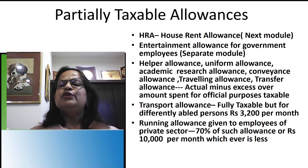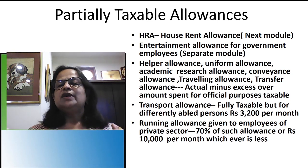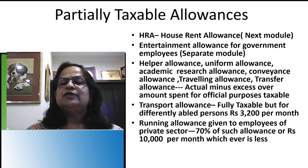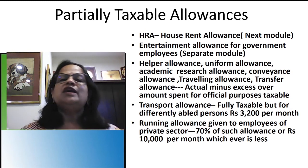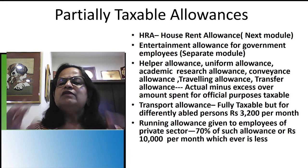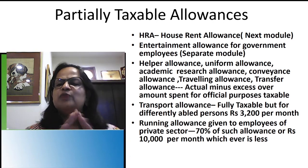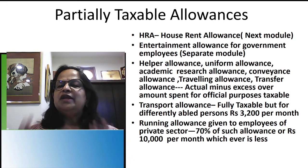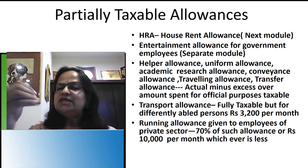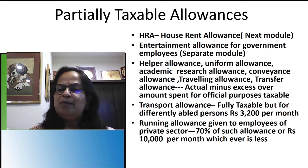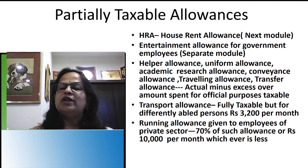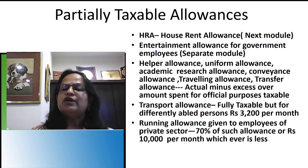For example, if you receive uniform allowance of 15,000 and spend 10,000, then 5,000 is taxable. If you spend the full 15,000, there is no tax. Helper allowance, uniform allowance for Navy, Army, Police Department, Fire Force, academic research allowance, conveyance allowance, travelling allowance, and transfer allowance — in all these cases, actual amount received minus actual amount spent; if any excess is taxable.